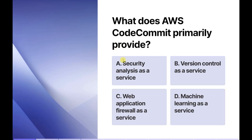Let's understand the other options as well. Security analysis as a service — there is a different service called AWS Inspector which helps us analyze security. Web application firewall — for that we have AWS WAF, which stands for AWS Web Application Firewall. For machine learning as a service, there is a service called SageMaker from AWS. So the answer for this question is version control as a service.